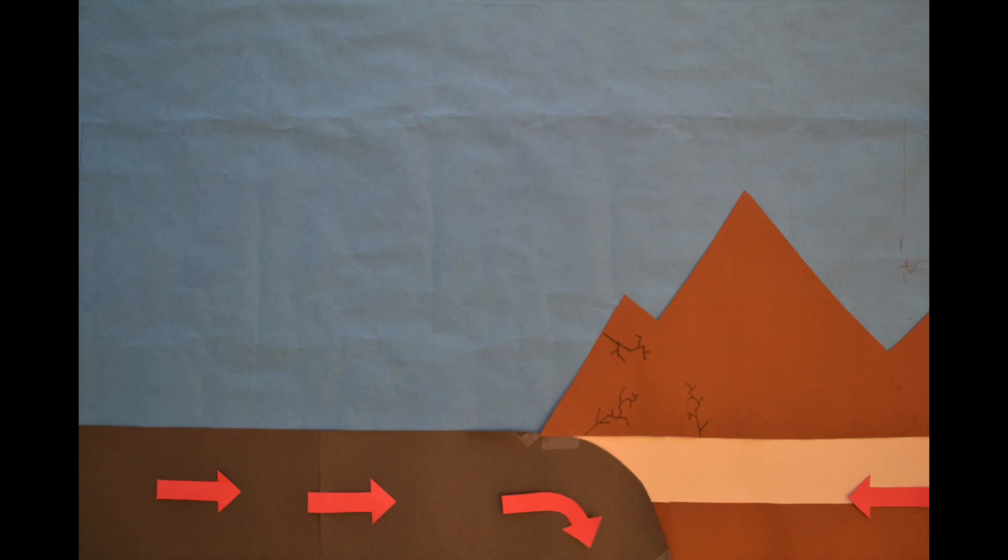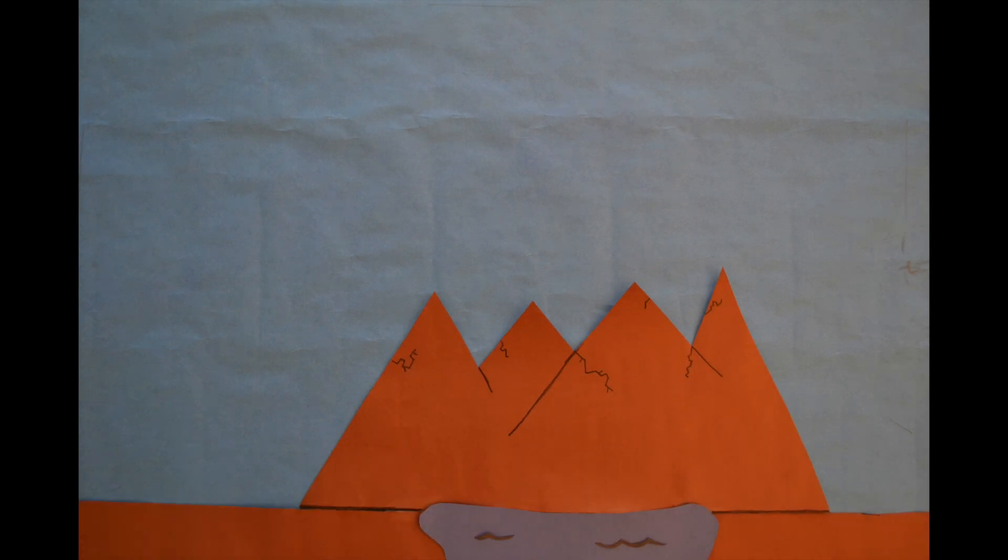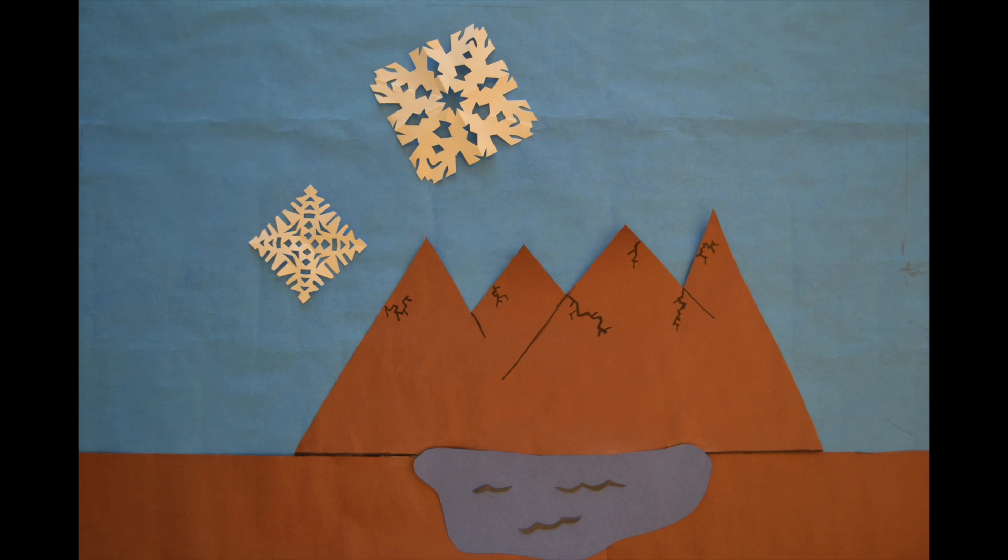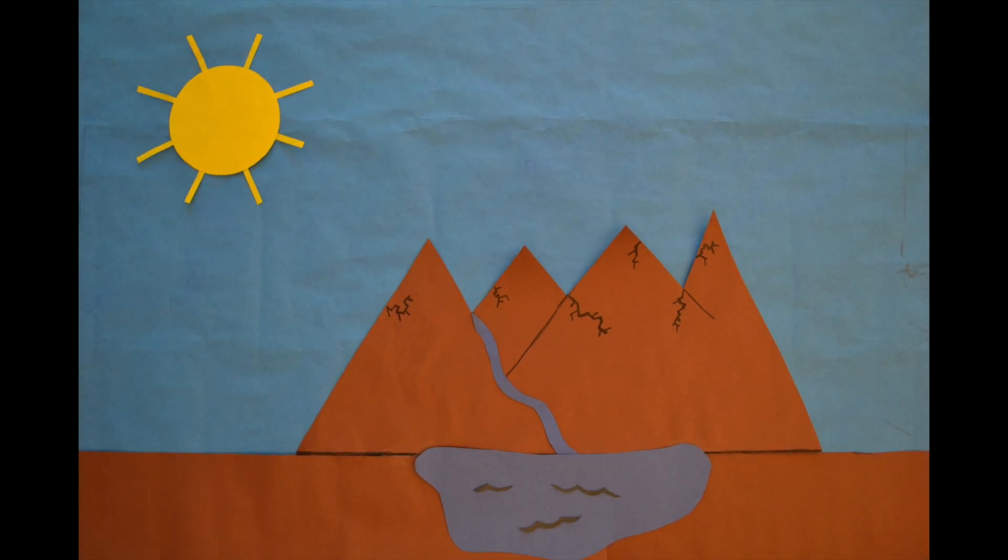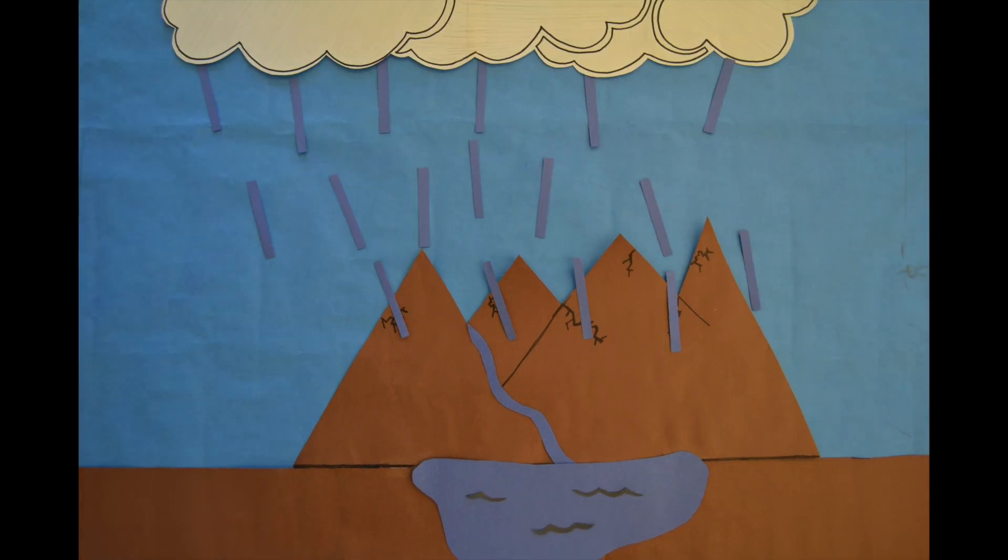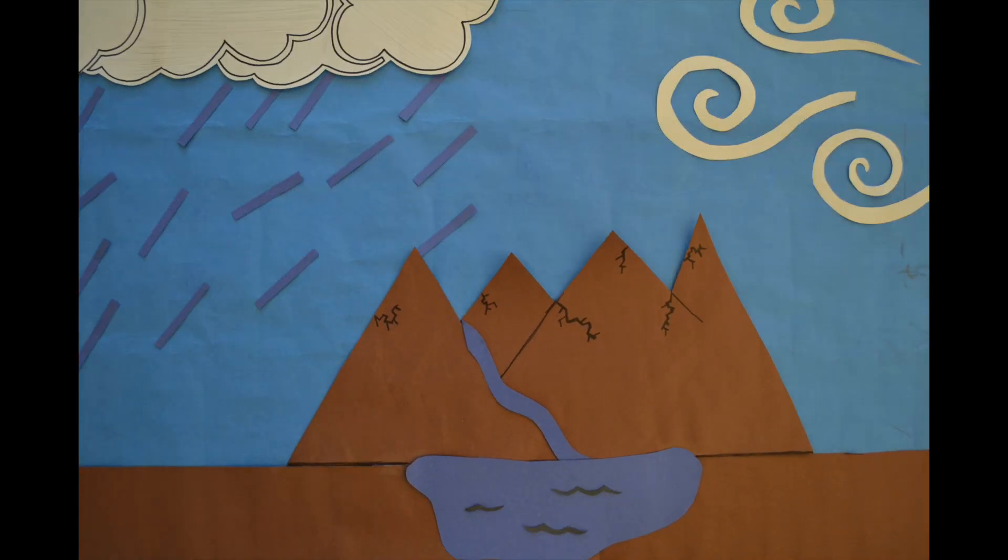Collisions along convergent plate boundaries can cause fractures to form in the rock. Other events, like freezing, can both amplify already existing fractures or form new ones. Thaw events contribute to erosion. Weathering and erosion can also occur due to precipitation events and wind.